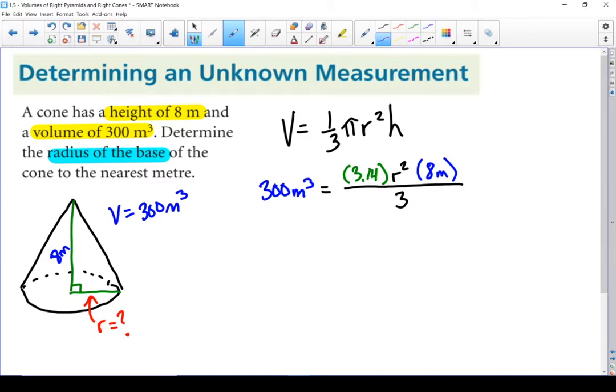It's dividing by 3, so I'm going to do the opposite, which is multiplying by 3. If I times this by 3, I've got to times that side by 3. I've got 900 equals 3.14 R squared times 8.